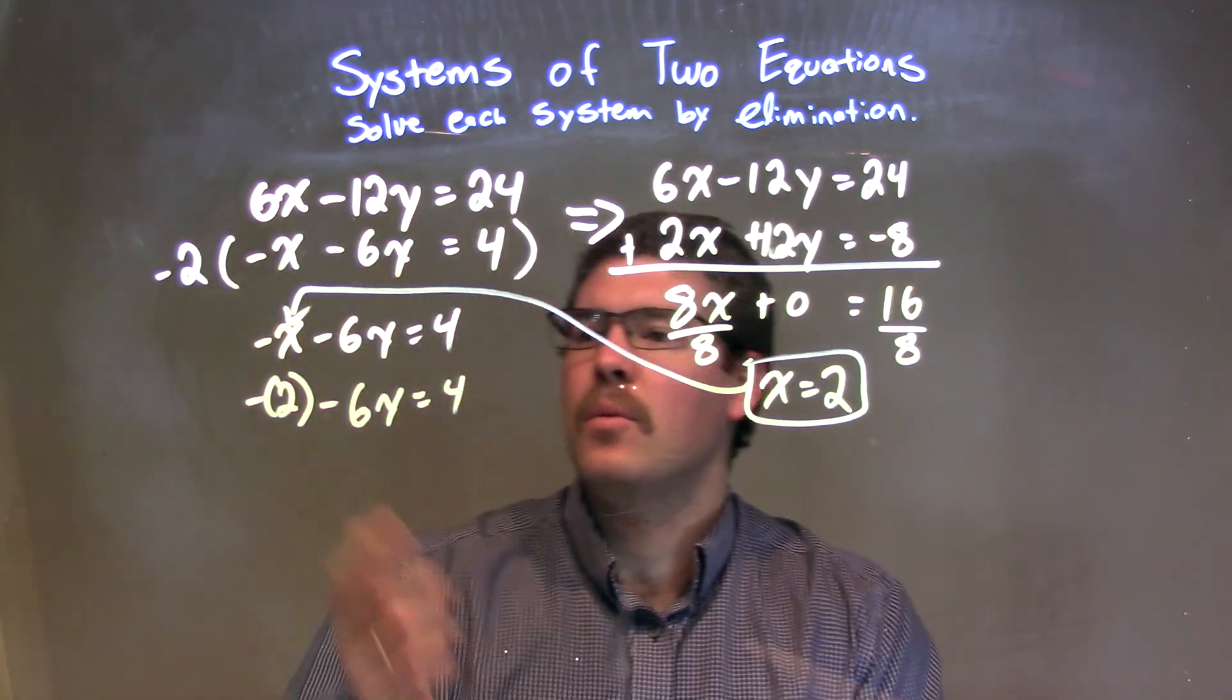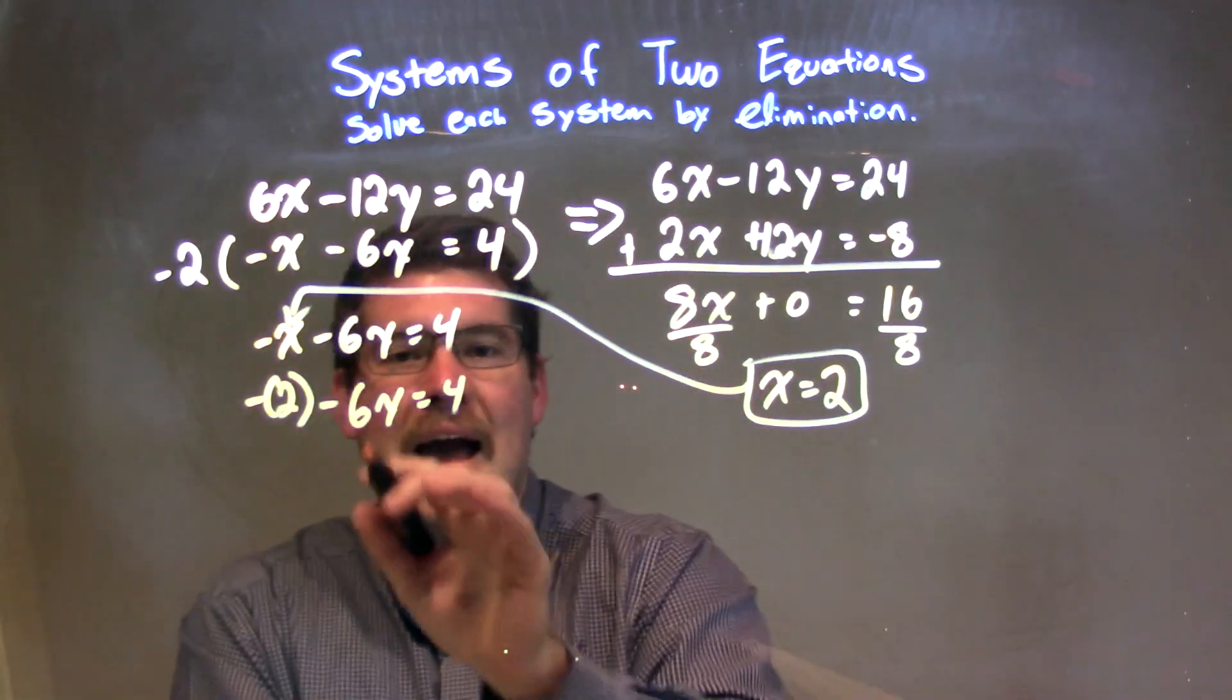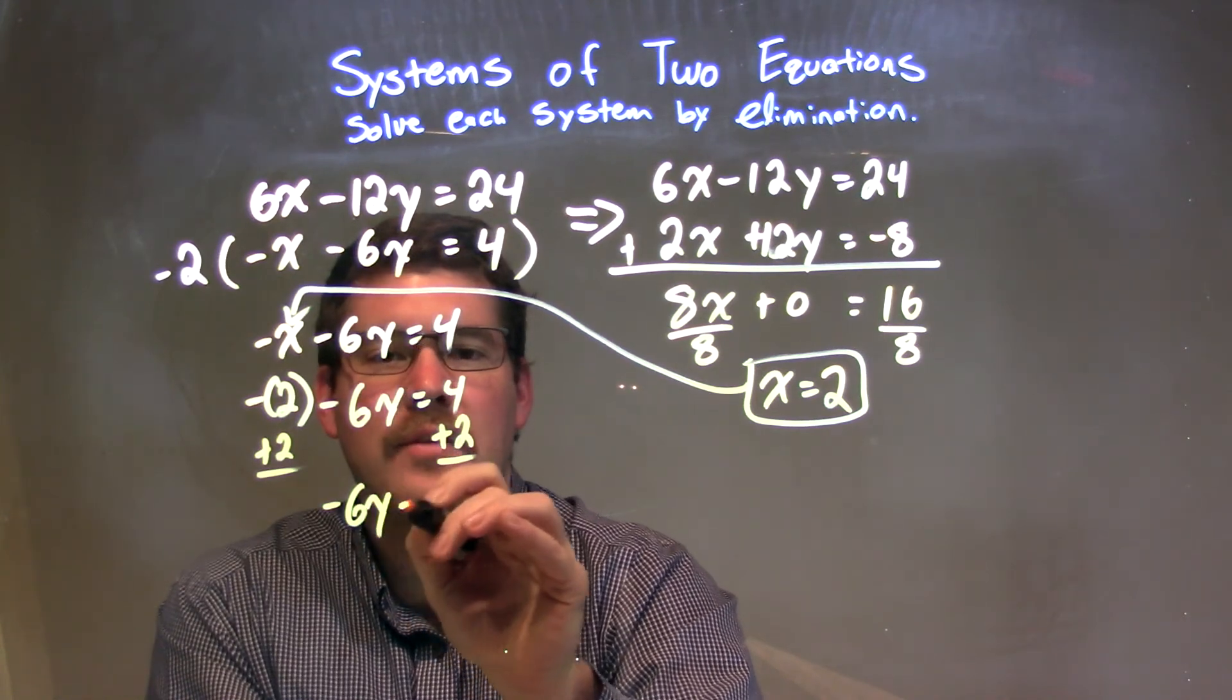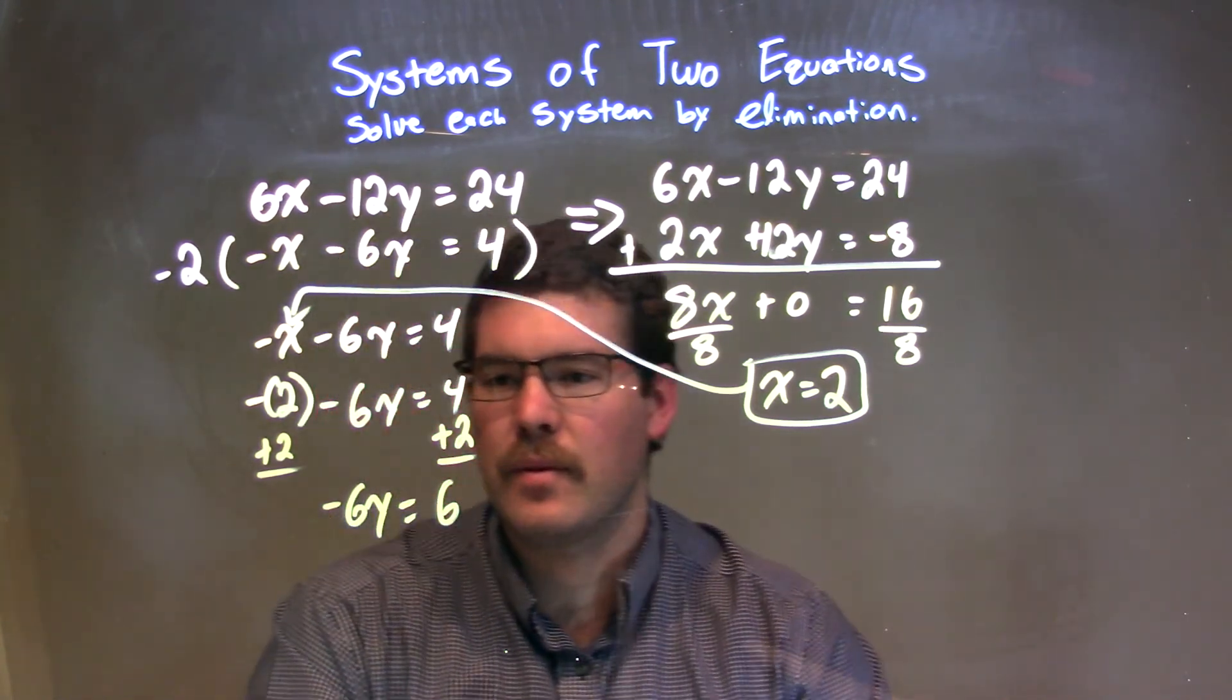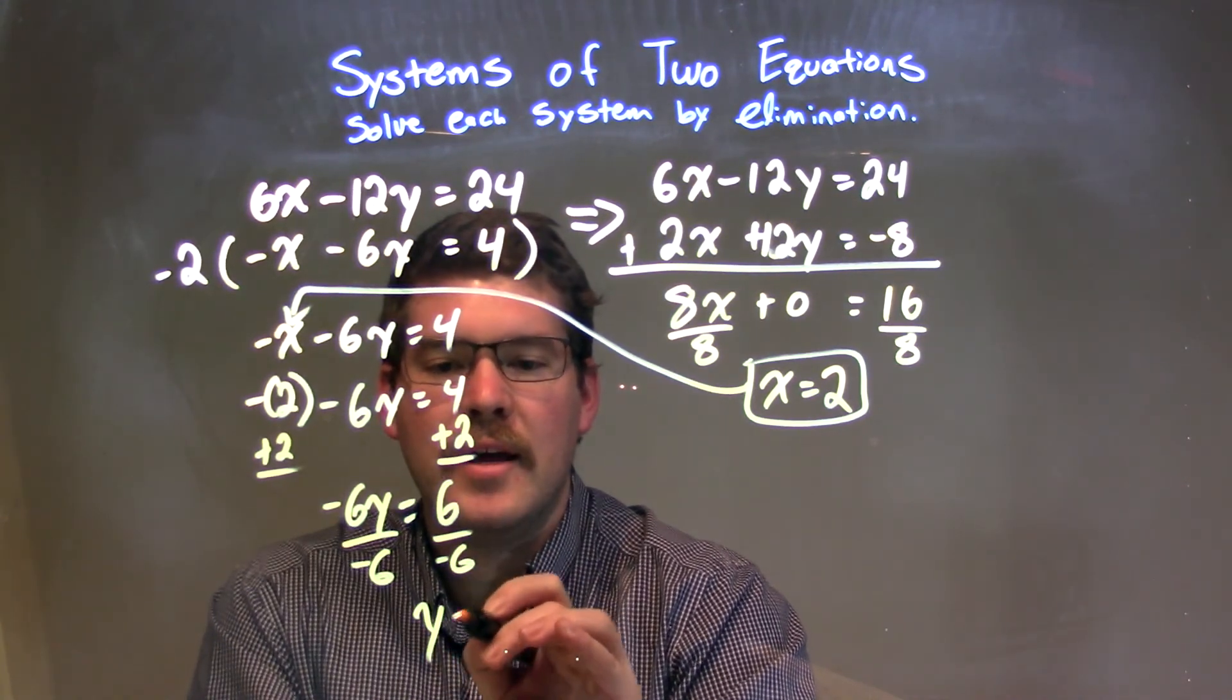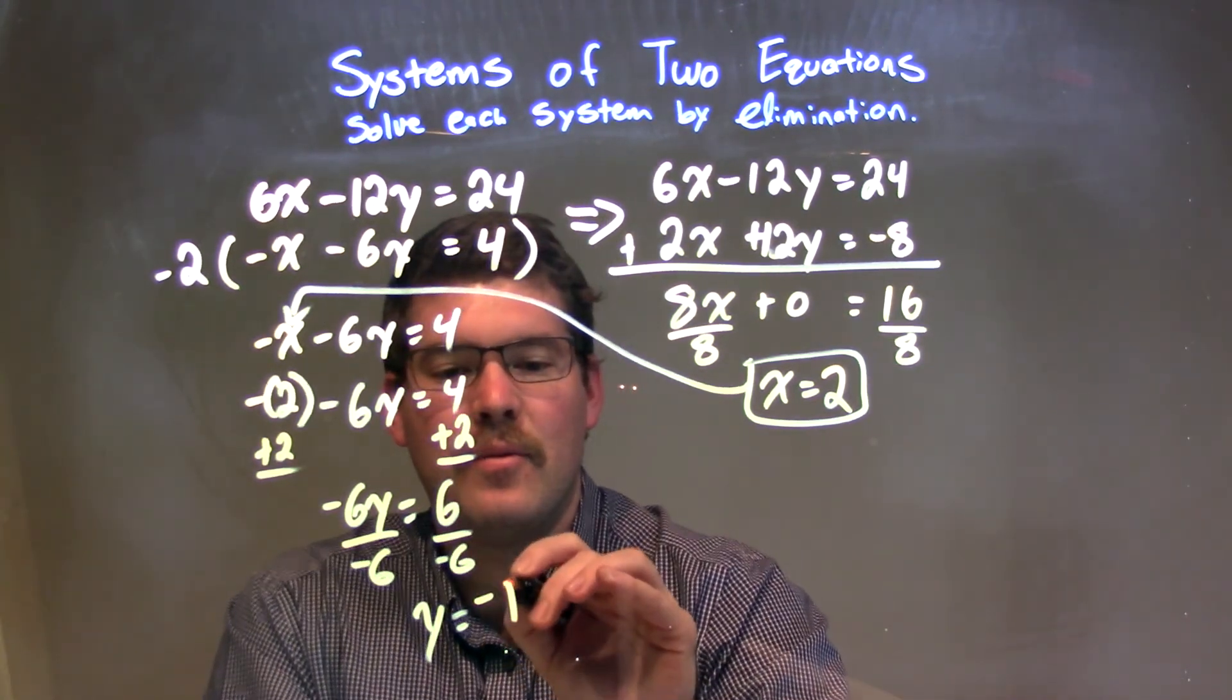We have negative 2 minus 6y equals 4. We can add 2 to both sides. This gives me negative 6y by itself equals positive 6. Divide by negative 6 on both sides. We have y equals 6 divided by negative 6, which is negative 1.